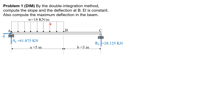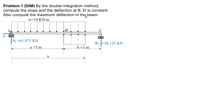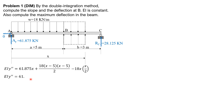We want one moment equation only. So we extend the load up to the section and neutralize it by adding a load of 18 kilonewton per meter upward. The distance from this section to origin point A is denoted by x. Therefore, since EI y double prime equals moment, the moment equation is: 61.875x plus 18 times (x minus 5)(x minus 5)/2, minus 18 times x times x/2. In short, EI y double prime equals 61.875x plus 9(x minus 5)squared minus 9x squared. This is the differential equation of the elastic curve.